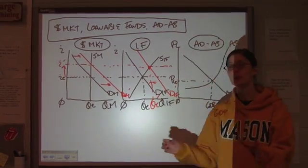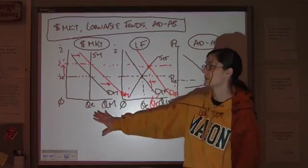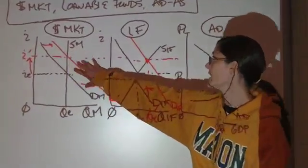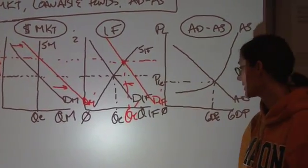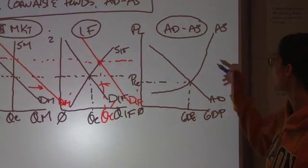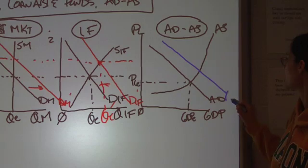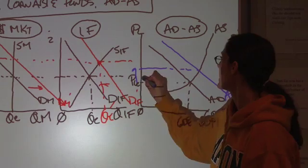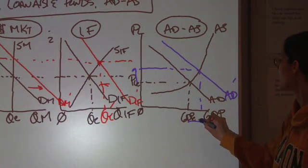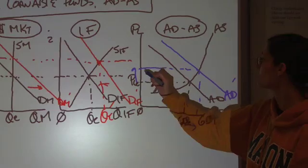Now, if we have an increase in government spending, government runs a deficit, borrows it here, you have an increased demand here, driving up interest rates. Increase in government spending is going to increase aggregate demand over here. Such that we have an increase in price level and an increase in GDP.